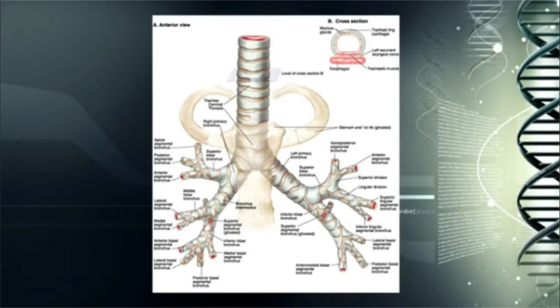Notice that there is the main bronchial tube that comes down, and one half goes into the right lung, the other half goes into the left lung.